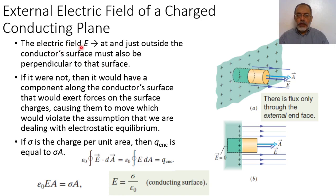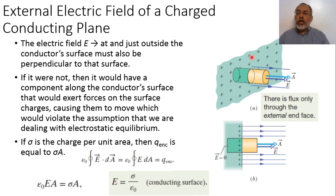The electric field E just outside the conductor surface must be perpendicular to the surface. If the electric field were not perpendicular to the surface, this means that we have some tangential field component. This tangential component would introduce motion of the electric charges on the surface, and this motion occurs only at non-equilibrium state.